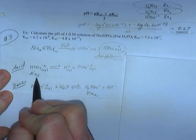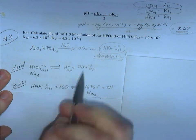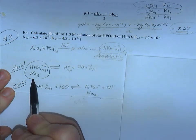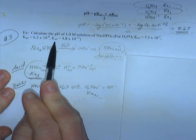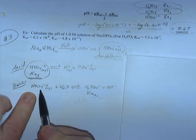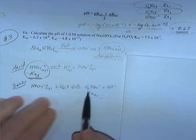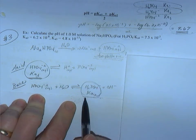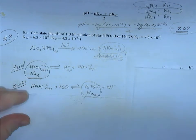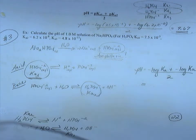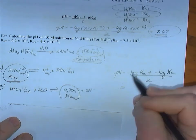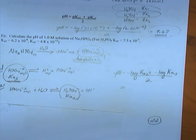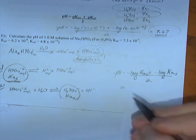HPO4²⁻ behaving as an acid releases the third hydrogen ion — that reaction is described by Ka3. Behaving as a base, it accepts a hydrogen ion; its conjugate acid is H2PO4⁻, which is described by Ka2. So concentration doesn't factor in — we just take the negative log of Ka2 and Ka3 (order doesn't matter), divide by 2, and our answer is pH = 9.76.